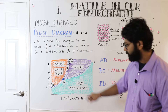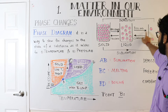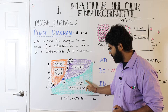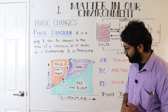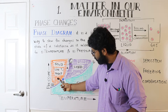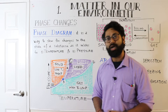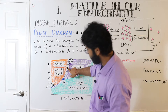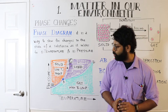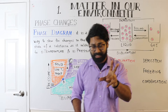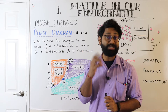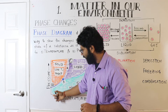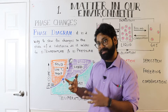Now, in the BC line, melting occurs when temperature increases. But pressure is also important. If we keep the temperature constant and reduce the pressure, we can also move into the liquid phase, because solid exists at higher pressure. So both temperature and pressure matter for phase changes along the BC line.